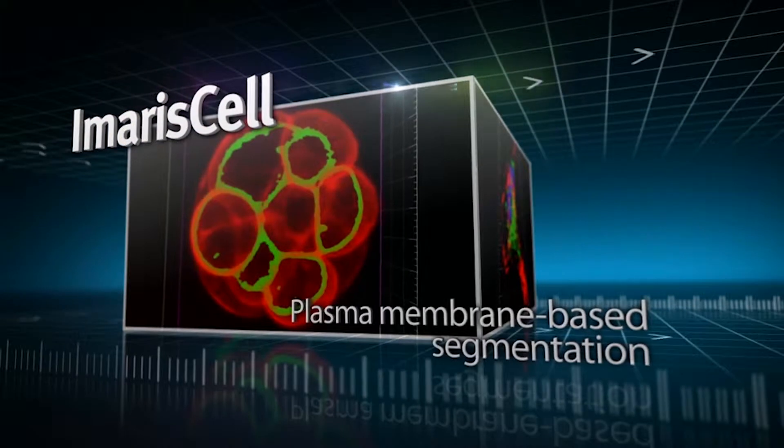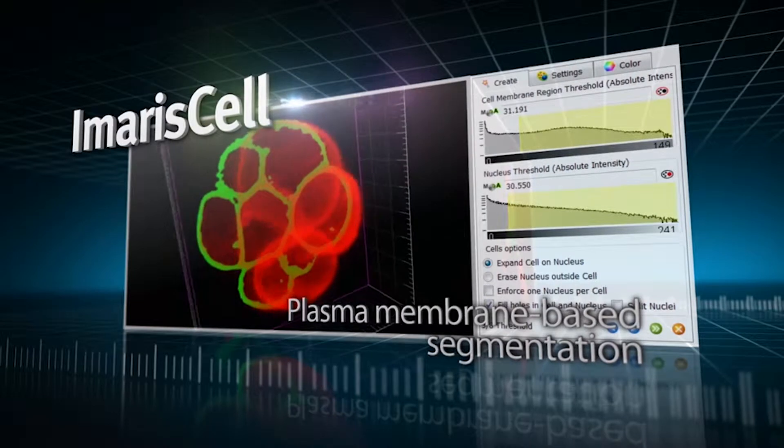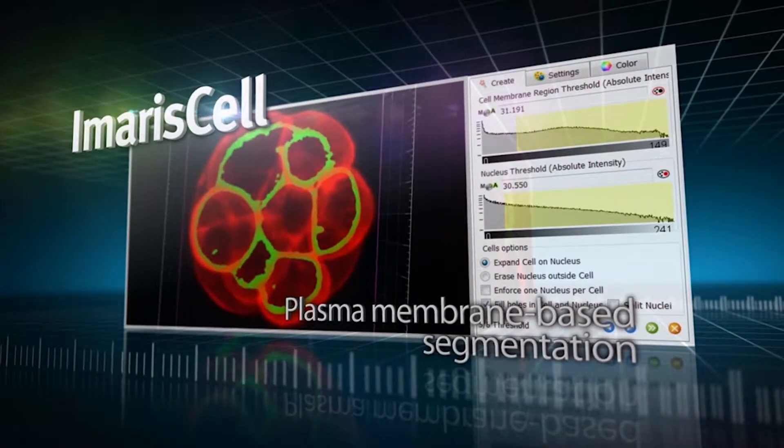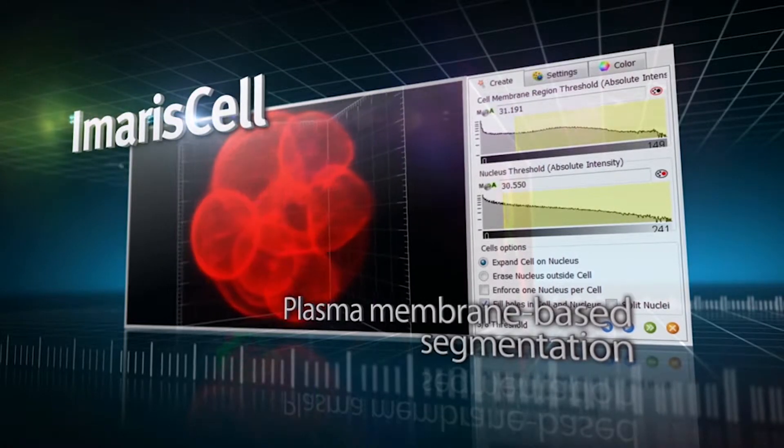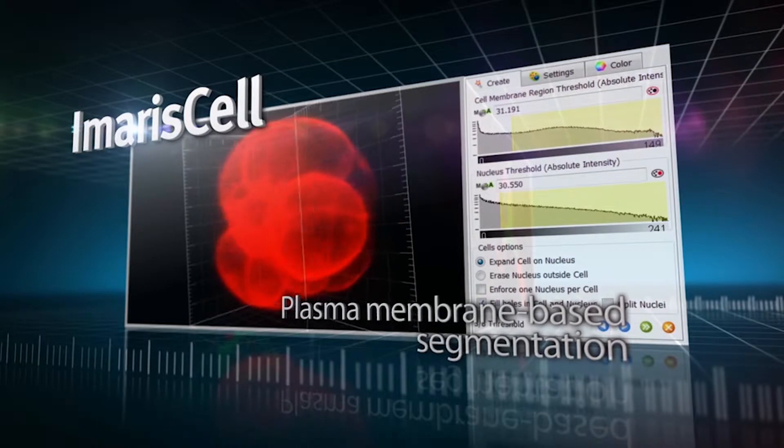The newest tools in the latest version of Imaris make the cell even more powerful. Plasma membrane detection and segmentation algorithms, as well as Imaris Cell's capability to dissect and classify different pools of vesicles, lead to better understanding of cellular structures.